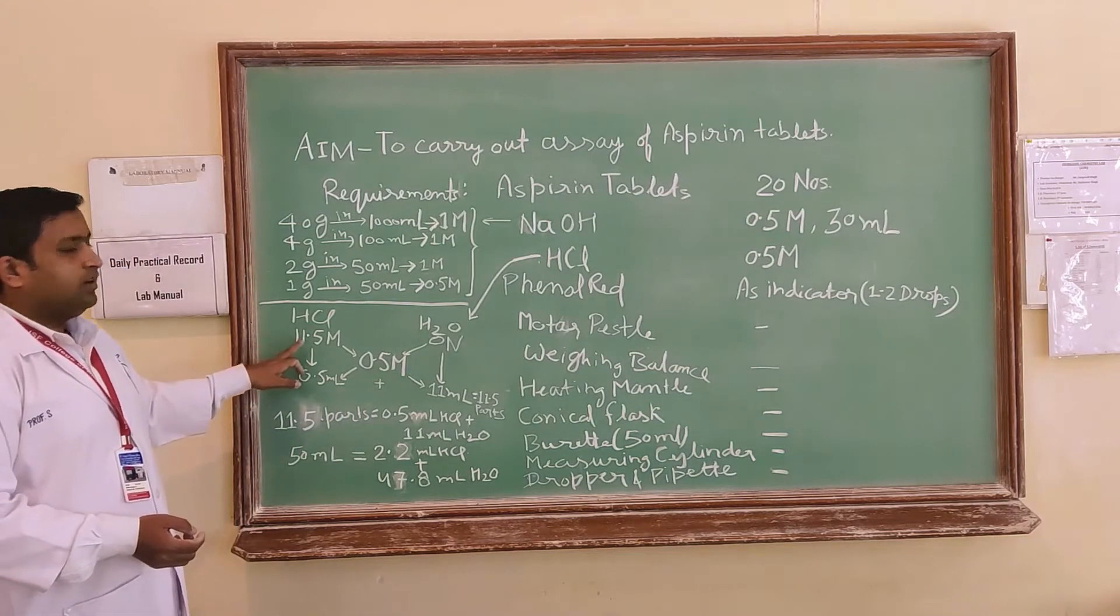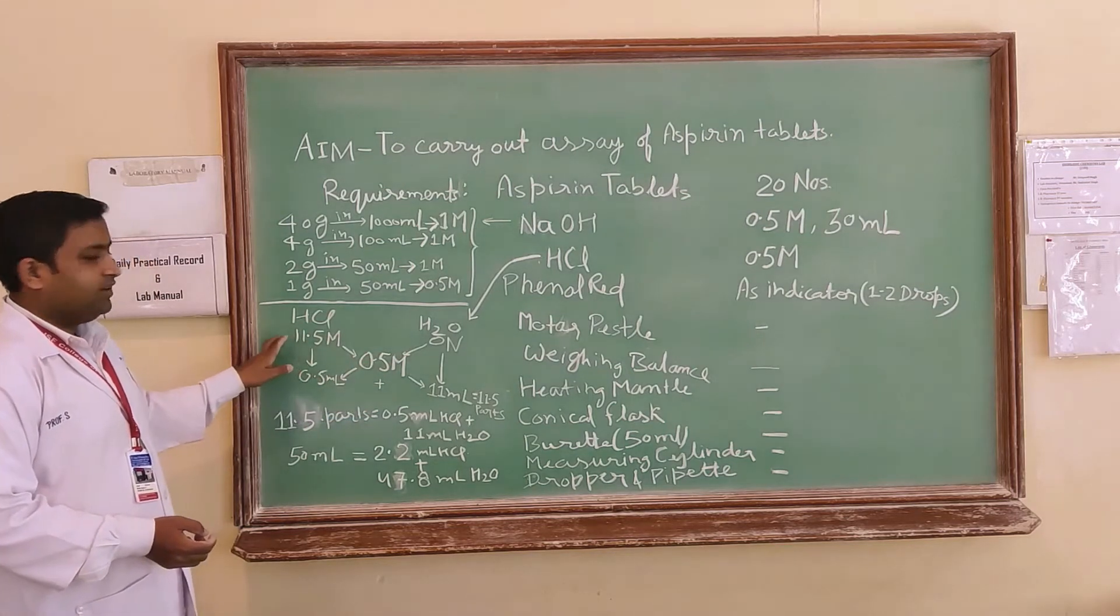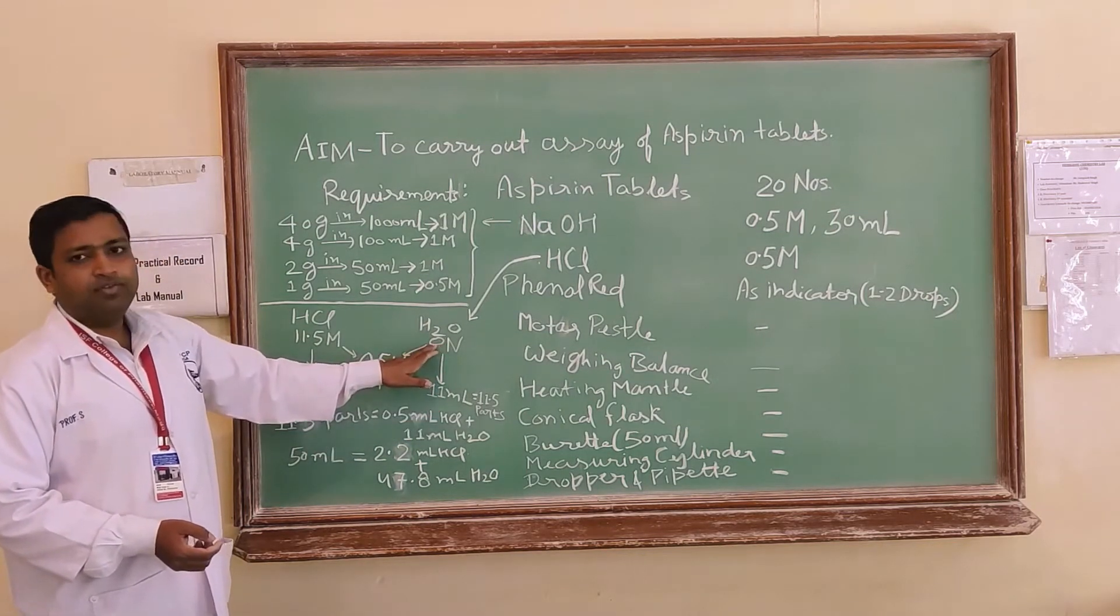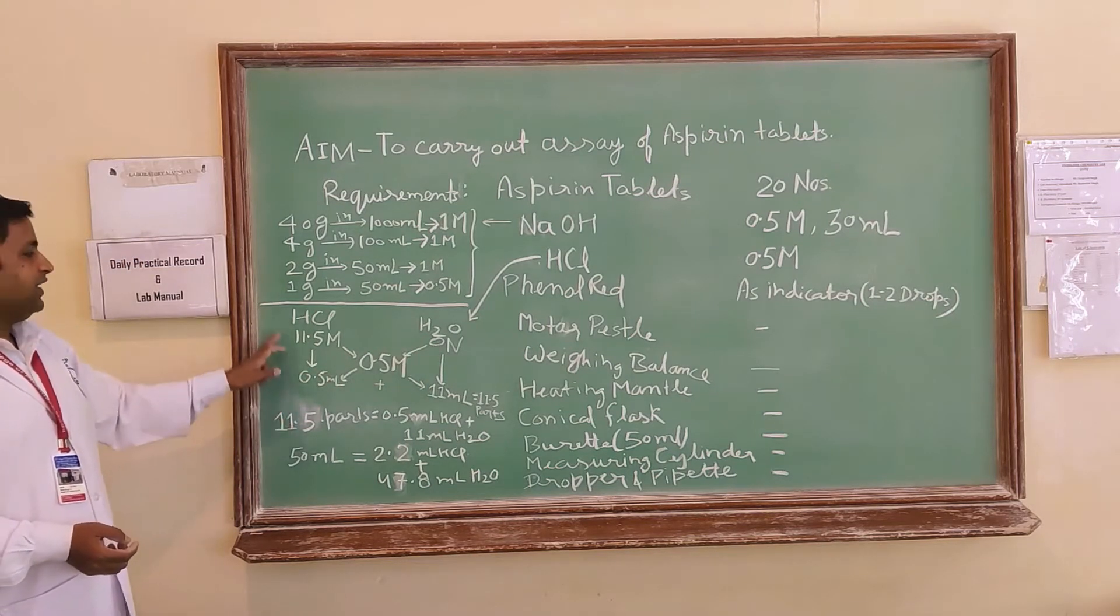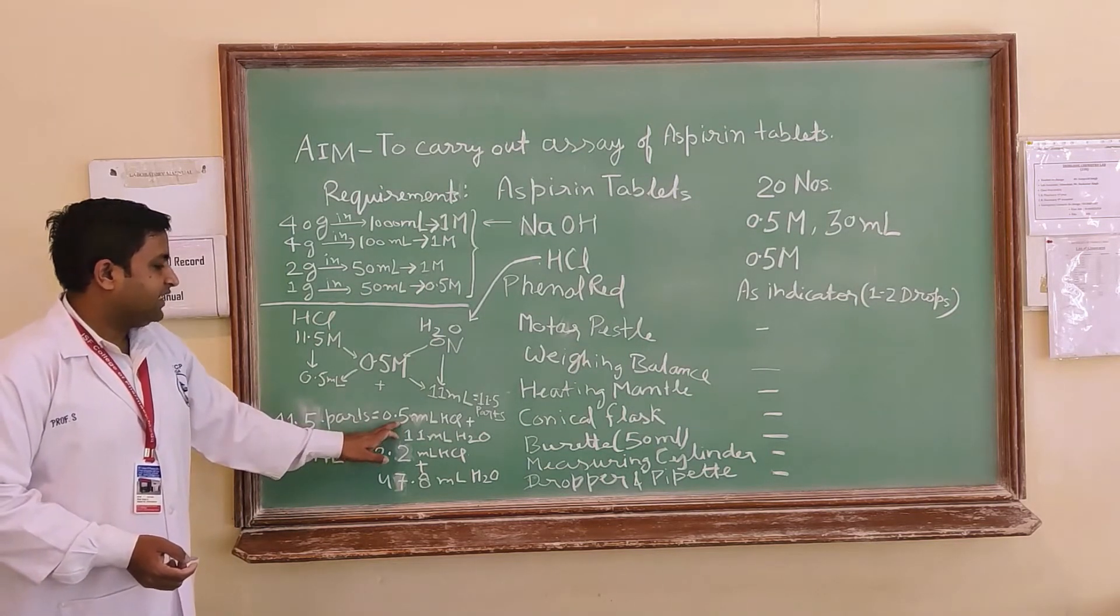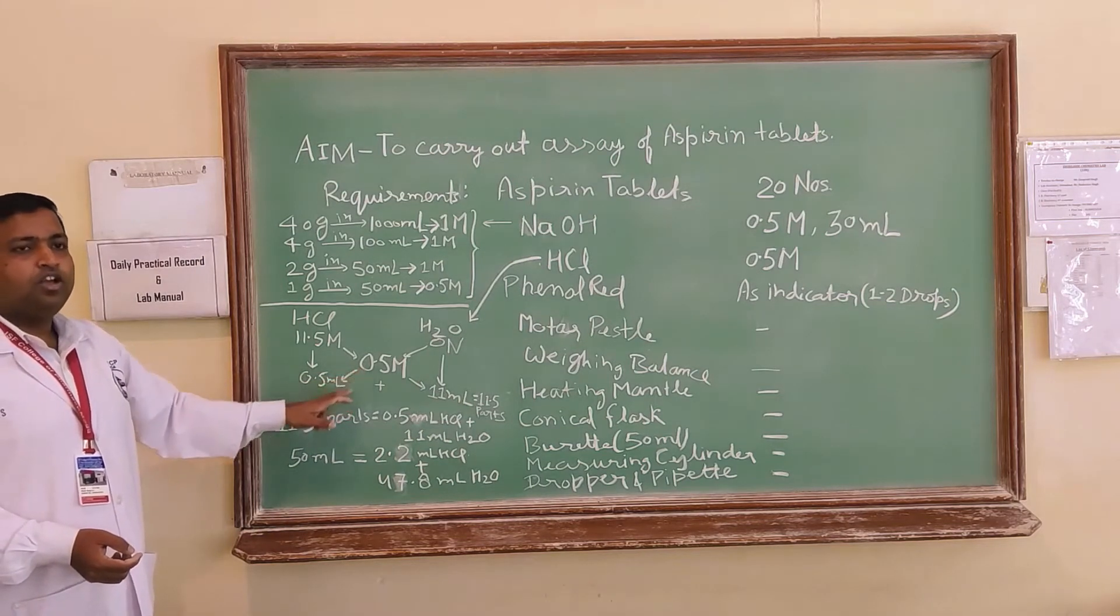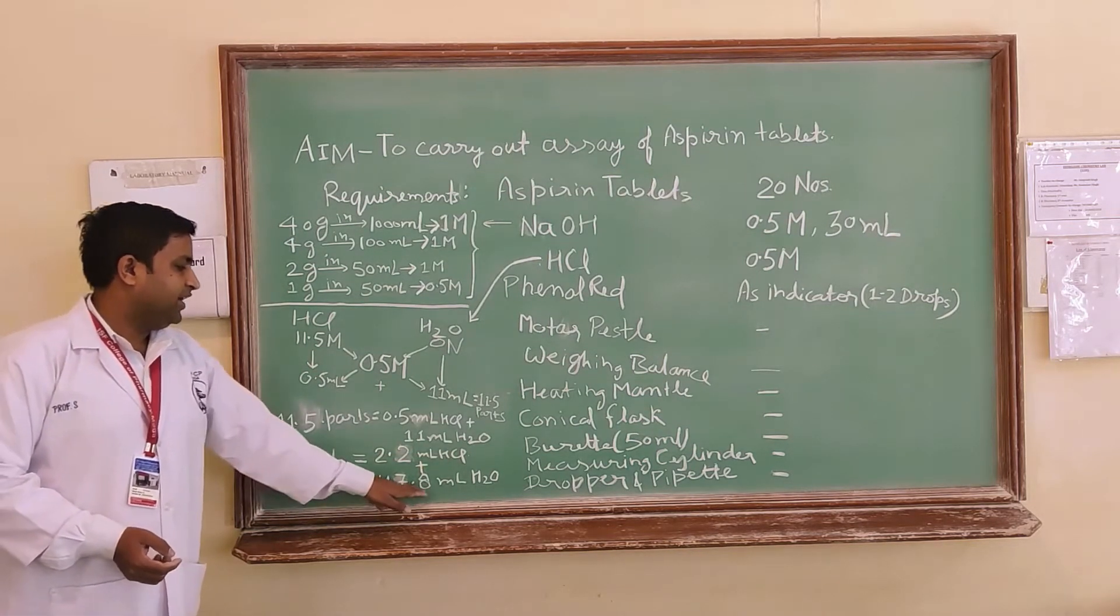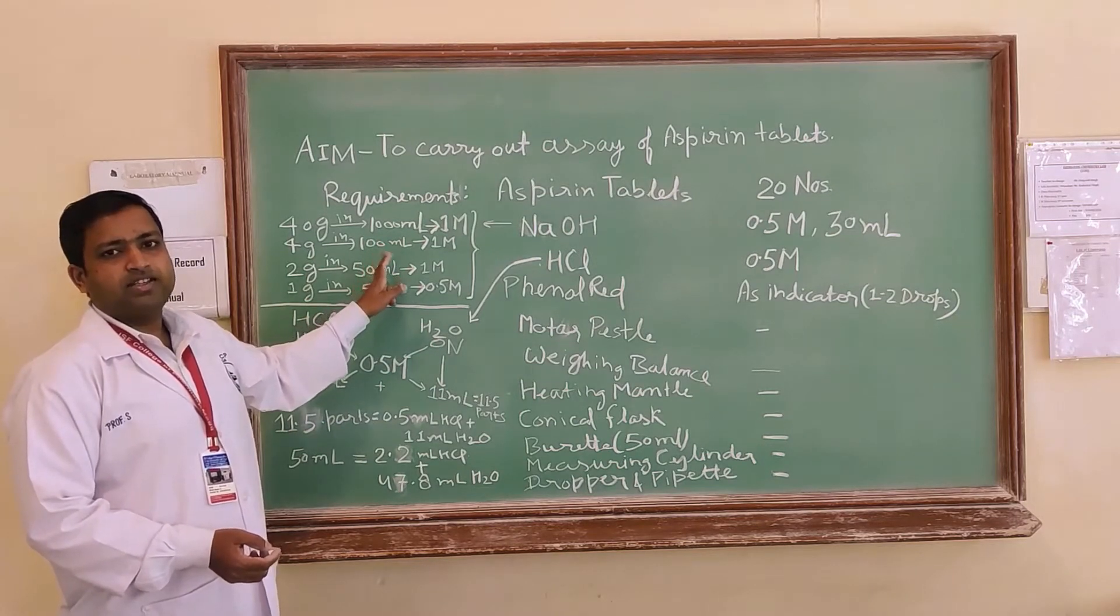So you can see that if we put the desired quantity 0.5 molar in center and deduct the 11.5 molar with 0.5 which is 11 ml, this will be the quantity of water and 0.5 minus 0 is equal to 0.5, this will be the quantity of HCl. If you will take 0.5 ml of HCl and 11 ml of water it will make 11.5 ml of 0.5 molar HCl. You will need 50 ml accordingly, for 50 ml you will need 2.2 ml of HCl and 47.8 ml of water.